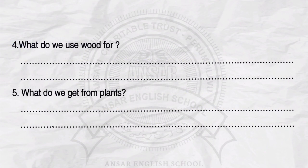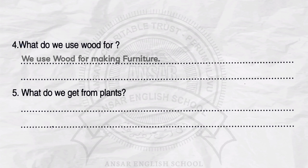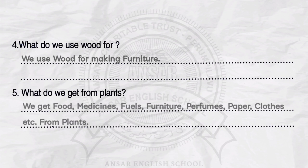Question number 4. What do we use wood for? Answer: We use wood for making furniture. Question number 5. What do we get from plants? Answer: We get food, medicines, fuels, furniture, perfumes, paper, clothes, etc. from plants.